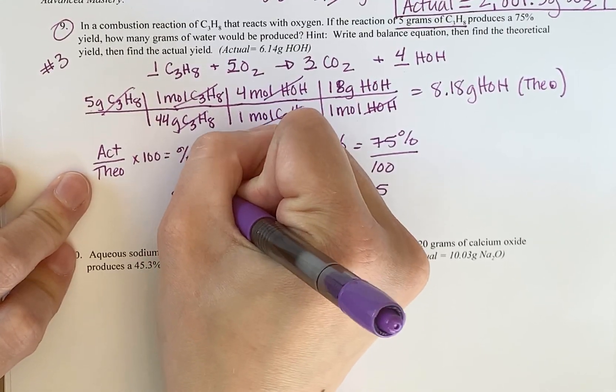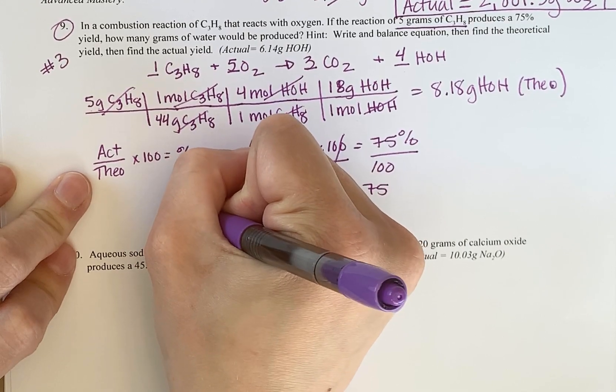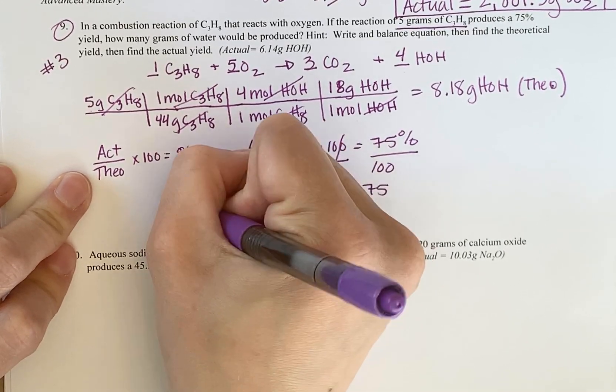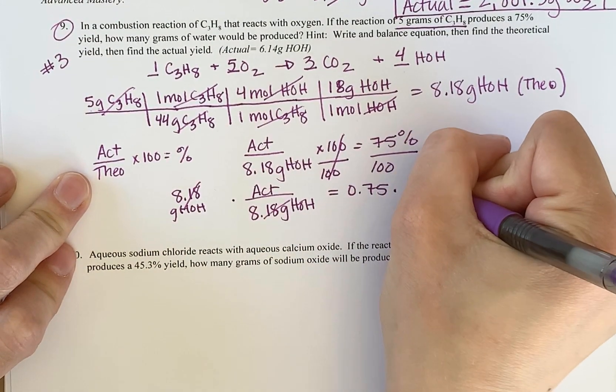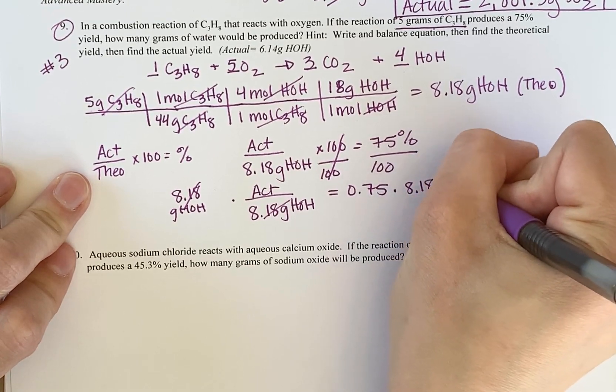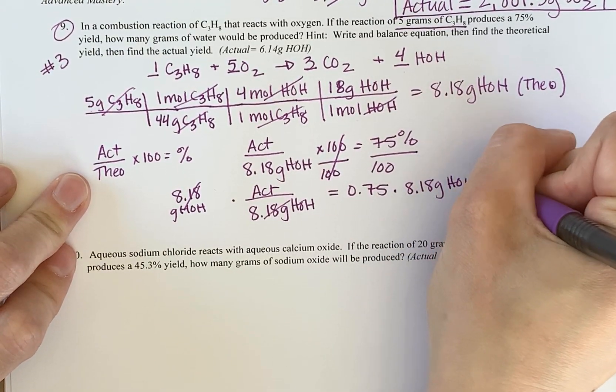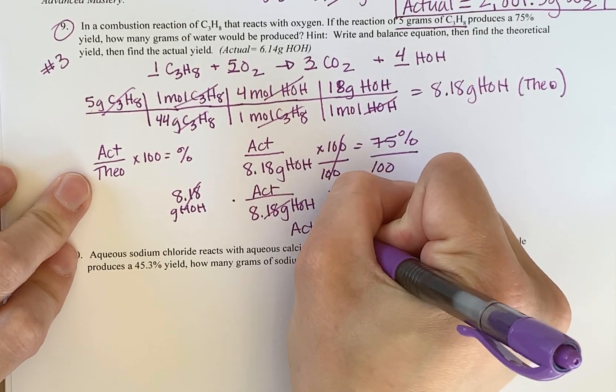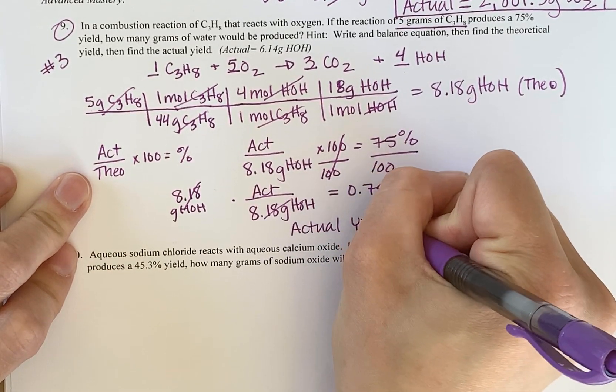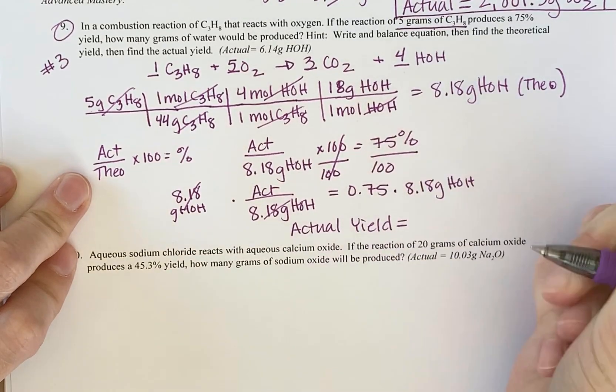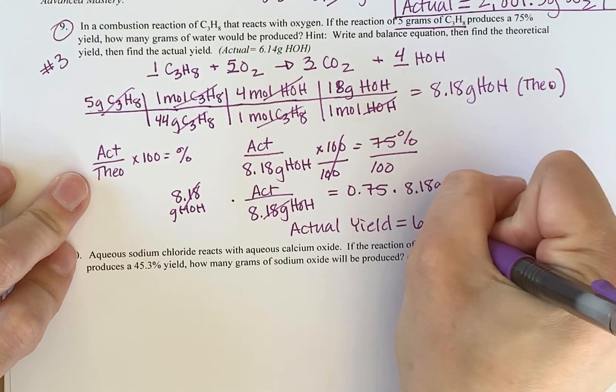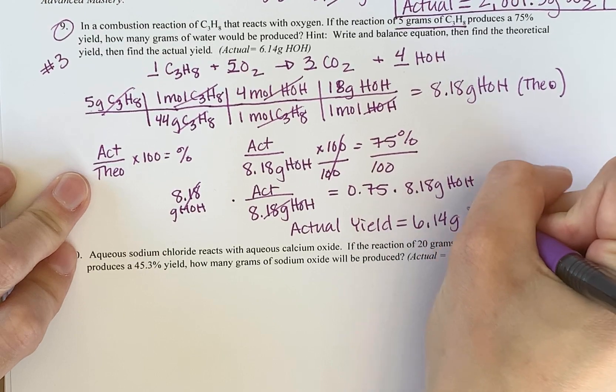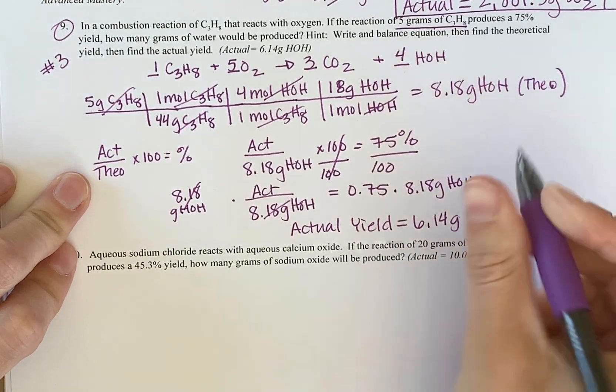Multiply 8.18 grams HOH. If I do it to one side, I do it to the other. And that gives me that my actual yield is equal to 6.14 grams of water.